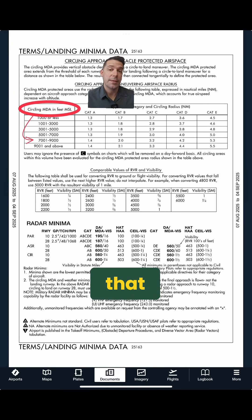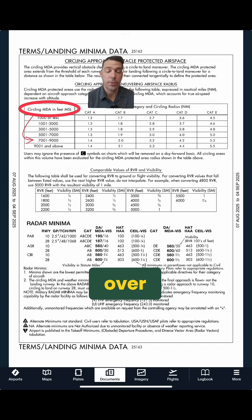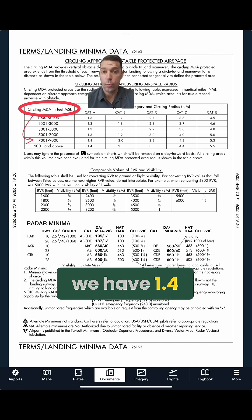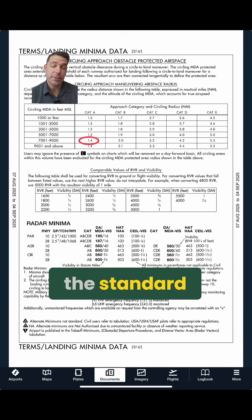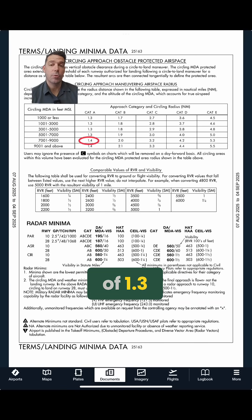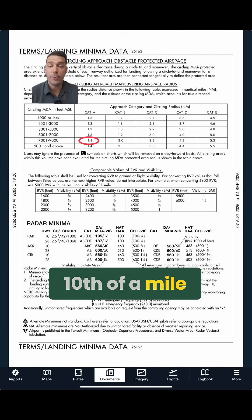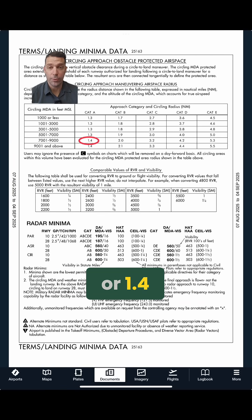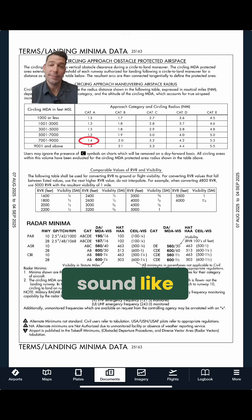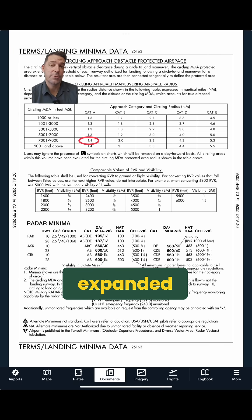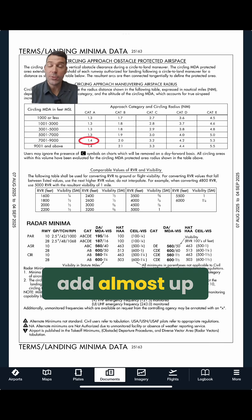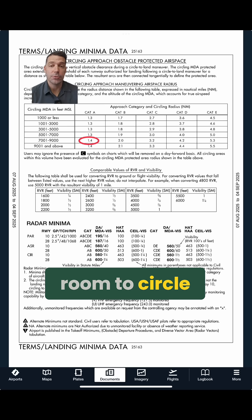Going back to the circling radius table, we can see that 7000 to 9000 is the line that we're in. If we read that over, we have 1.4 — instead of the standard Category A of 1.3, we have a whole tenth of a mile more, or 1.4. This doesn't sound like a lot, but if you look at the other categories, the expanded circling radius will add almost up to a mile of extra room to circle, depending on your MDA.